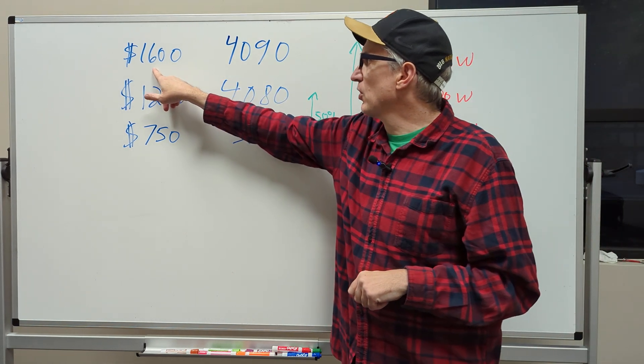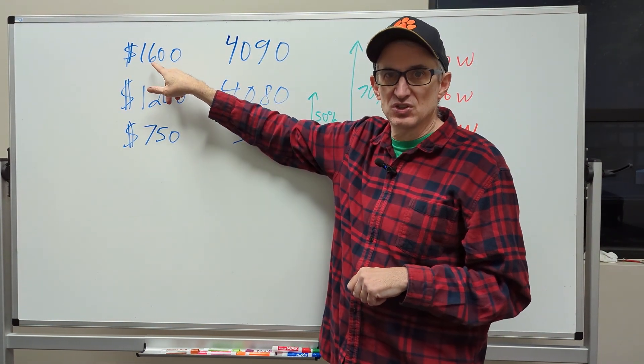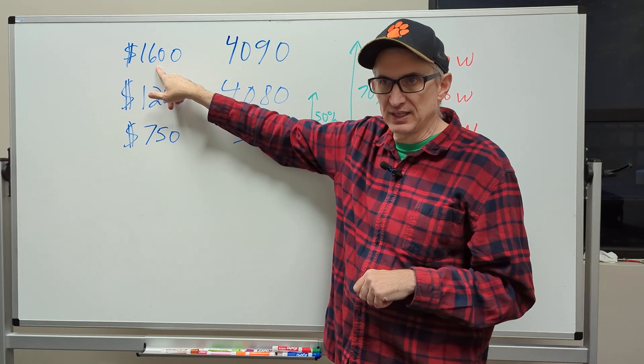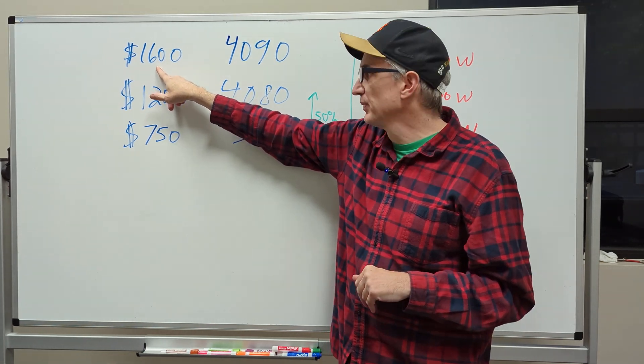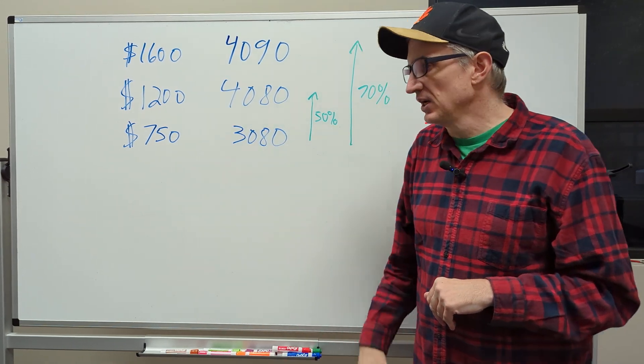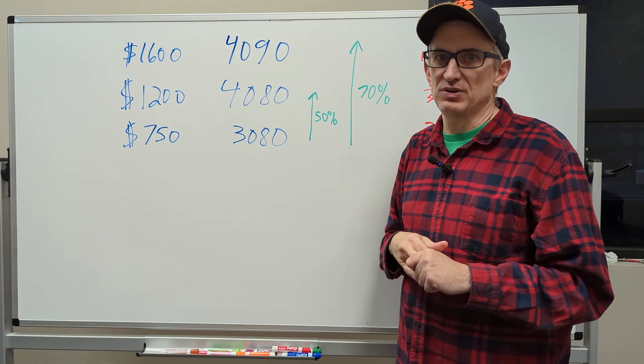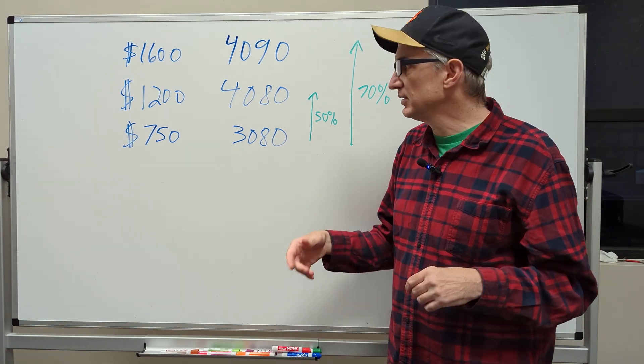So the 4090 starts at $1,600. This is not a hard number here. This is the cheapest you'll find one is $1,599, at least as far as I know. And then they go up from there by a couple hundred dollars. Save your money. The fancier cards aren't worth it. Just shoot for the $1,599 card. That's my opinion.